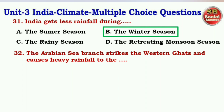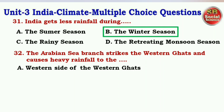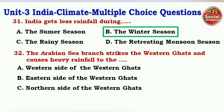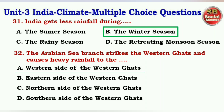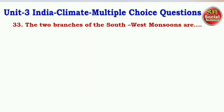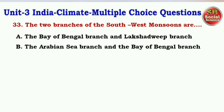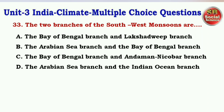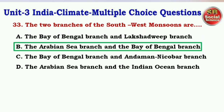Next question: The Arabian Sea Branch strikes the Western Ghats and causes heavy rainfall to the — options are western side of the Western Ghats, eastern side of the Western Ghats, northern side of the Western Ghats, southern side of the Western Ghats. The right answer is option A — western side of the Western Ghats. Next question: The two branches of the South West Monsoon are — options are the Bay of Bengal Branch and Lakshadweep Branch, the Arabian Sea Branch and the Bay of Bengal Branch, the Bay of Bengal Branch and Andaman Nicobar Branch, the Arabian Sea Branch and the Indian Ocean Branch. The right answer is option B — the Arabian Sea Branch and the Bay of Bengal Branch.